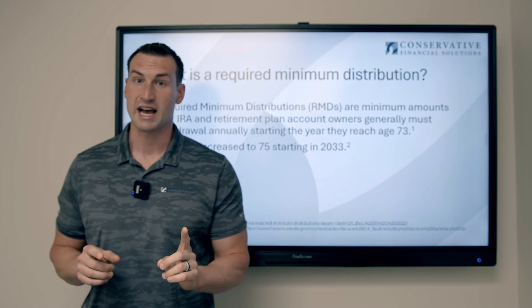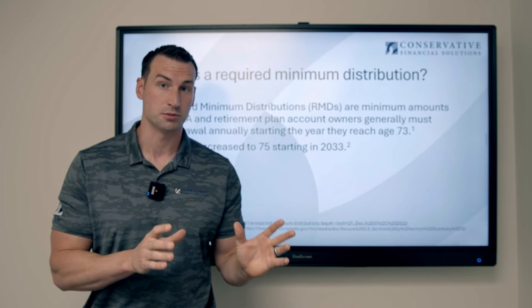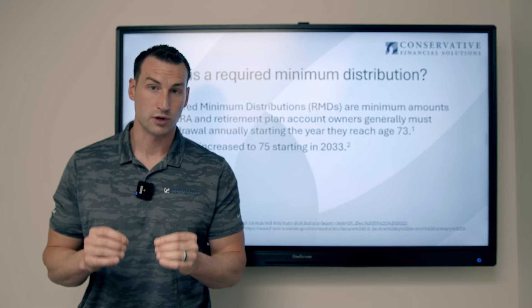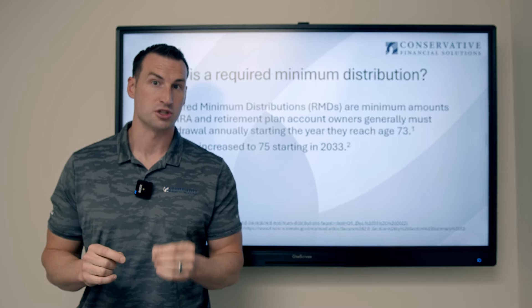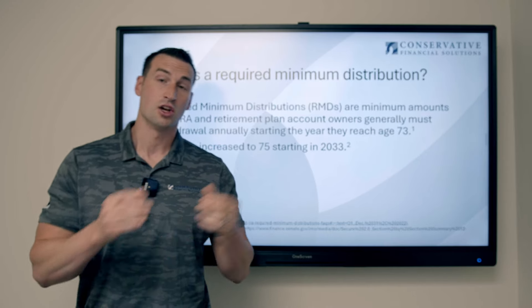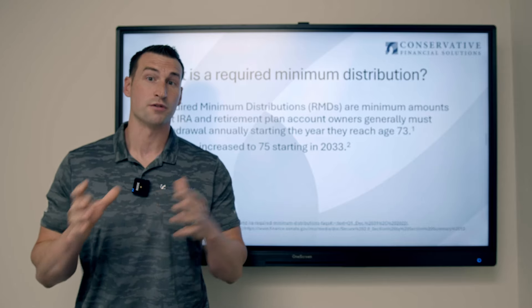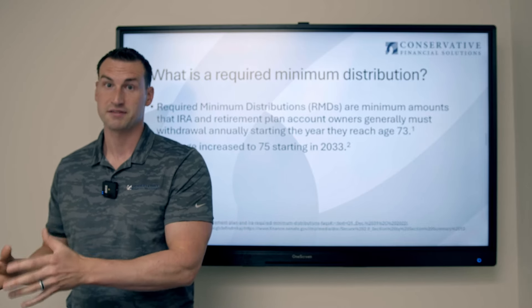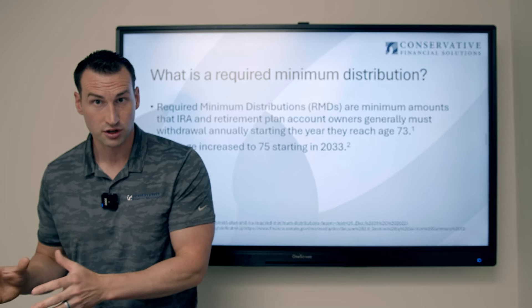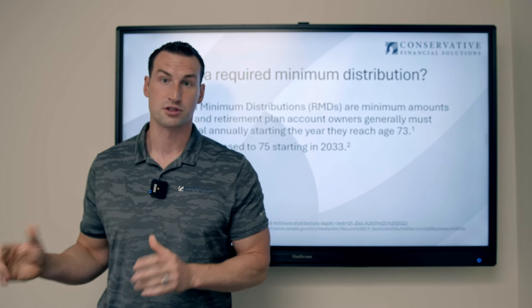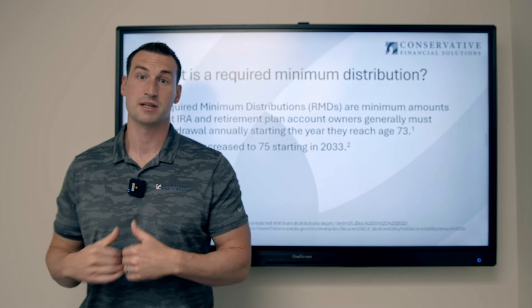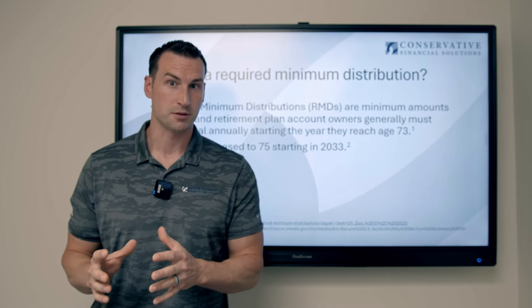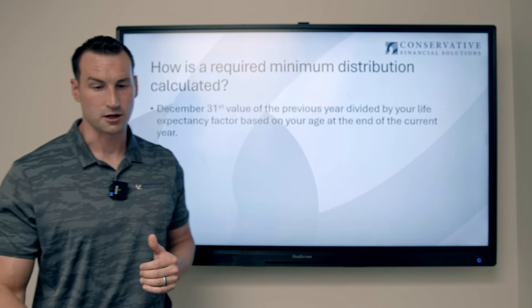But if you wait and take that first distribution in April of the next year, you're going to have to take two required minimum distributions in the same year — you'll have taken the one for the prior year by April 1st, and then you'll also have to satisfy the one for the current year before December 31st. Keep that in mind, because it may not make sense from a tax perspective to double up on RMDs in a single year.